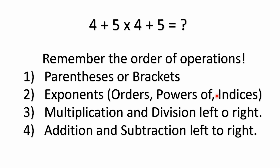Step number three is multiplication and division, solved left to right. Multiplication and division have equal precedence, so you just do them left to right as you find them. And then step four is addition and subtraction, also solved left to right. Addition and subtraction have equal precedence. So this is the basic order of operations.